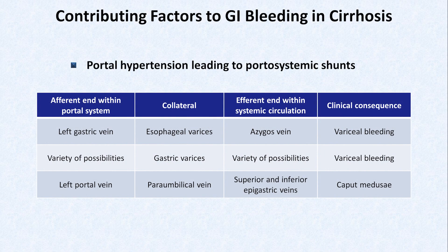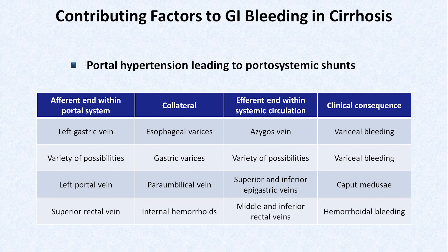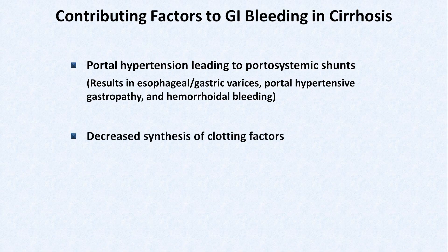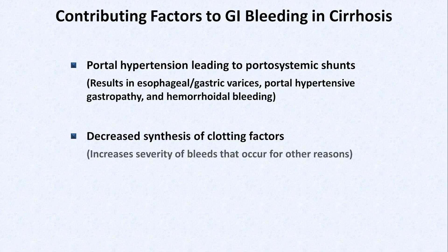Shunting of blood from the portal to systemic venous system that occurs in the rectum can lead to hemorrhoids. In addition to portal hypertension, another contributing factor to GI bleeding in cirrhosis is the decreased synthesis of clotting factors. This increases the severity of bleeds that occur for other reasons, rather than causing de novo bleeds on its own.